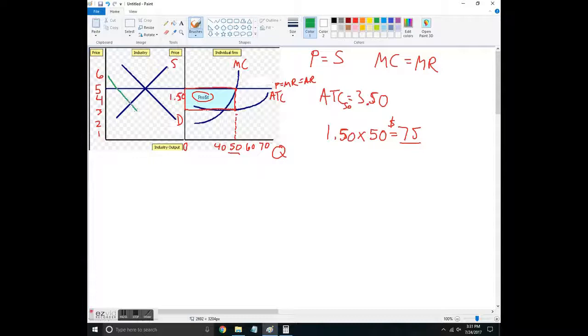Right, so the demand curve shifts in, and now there's a new equilibrium price. We'll say $3.75. So this is going to affect the individual firm.